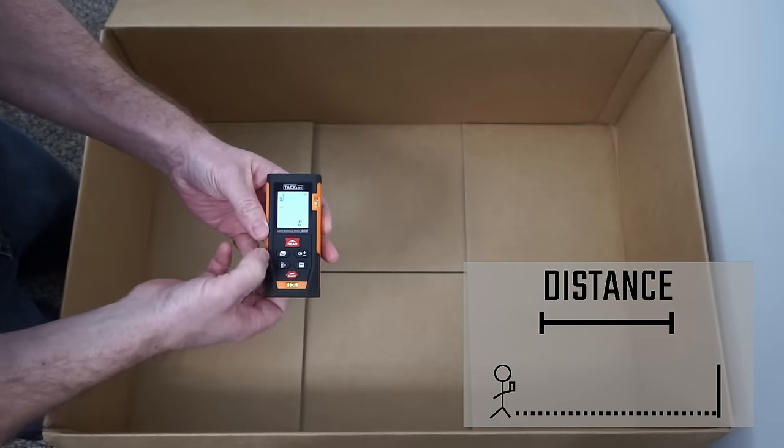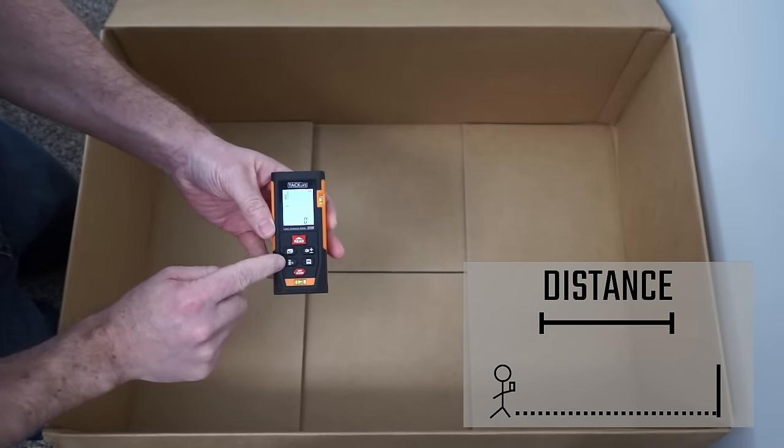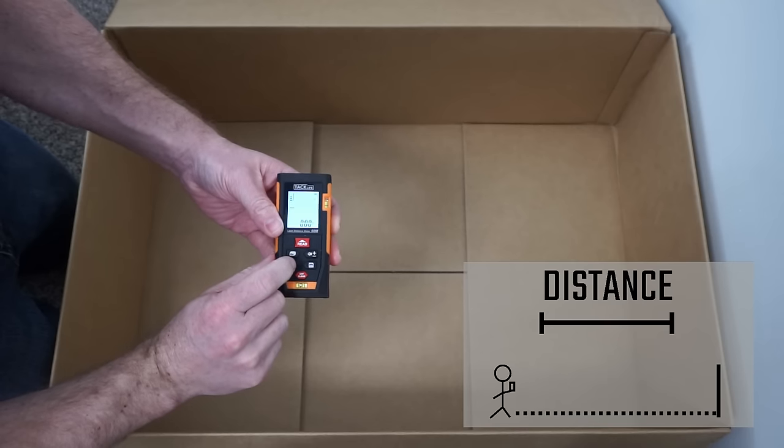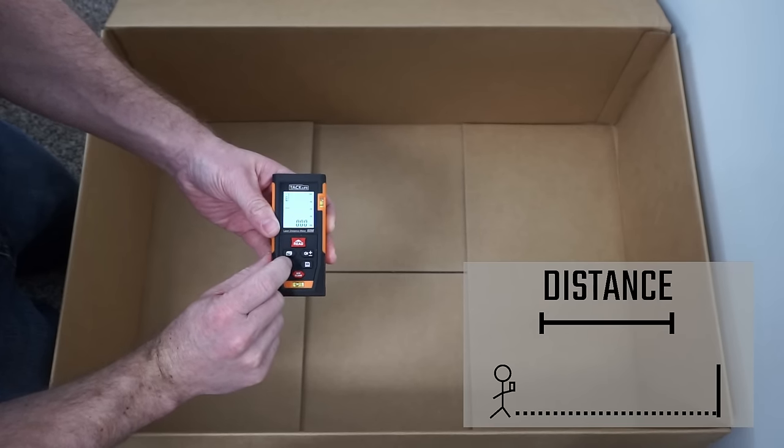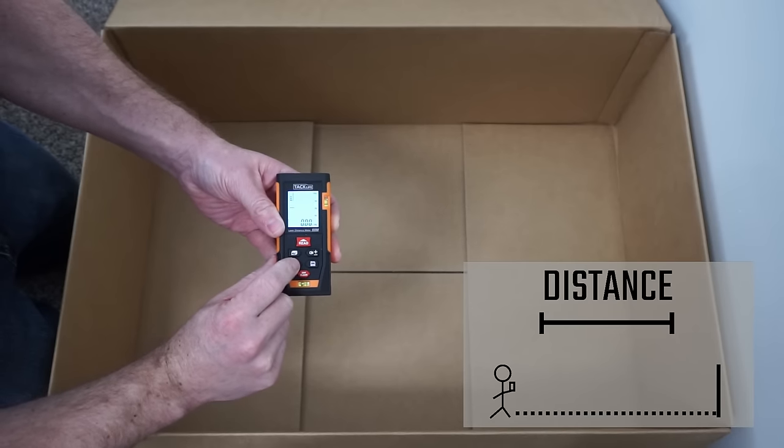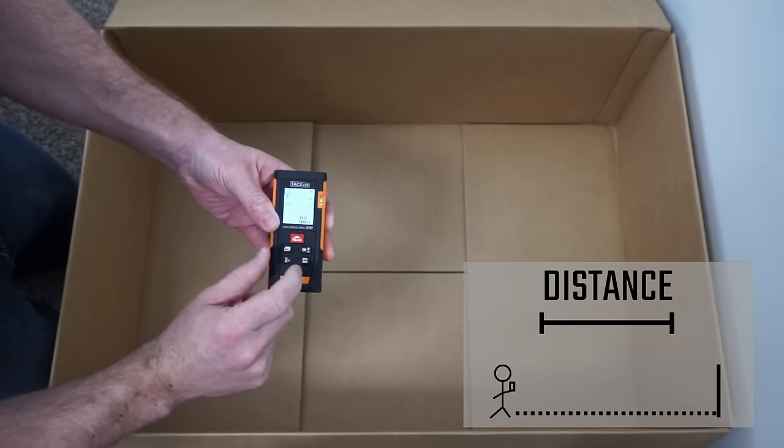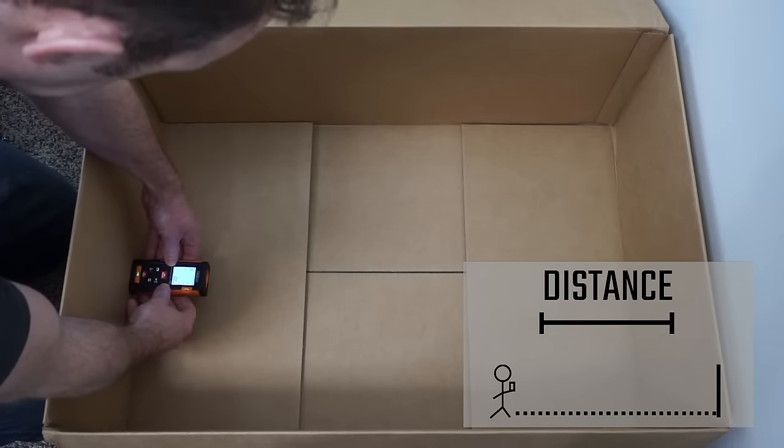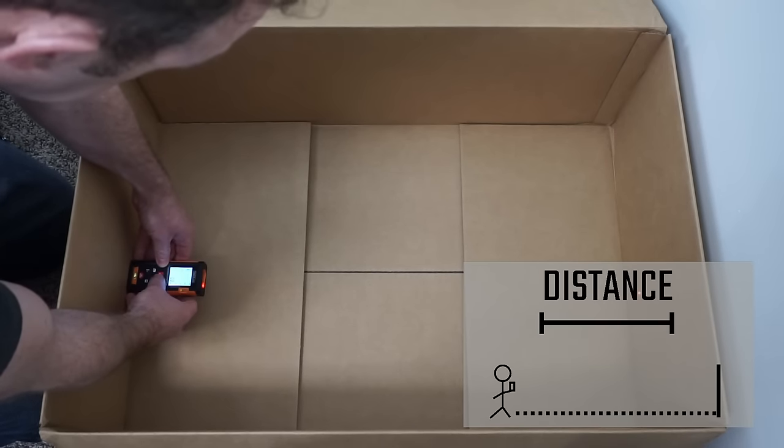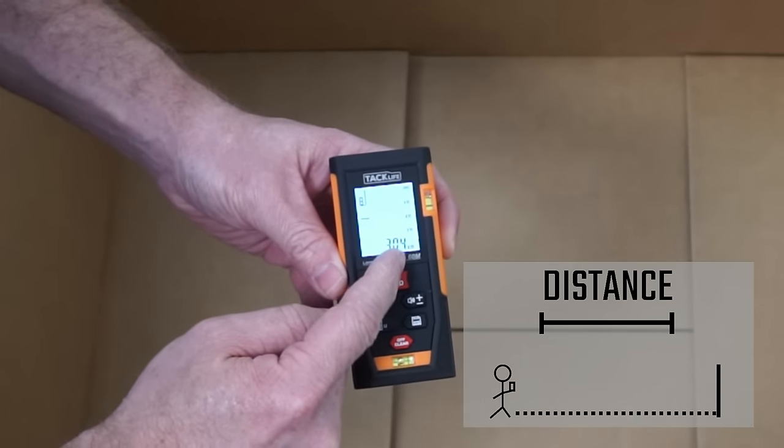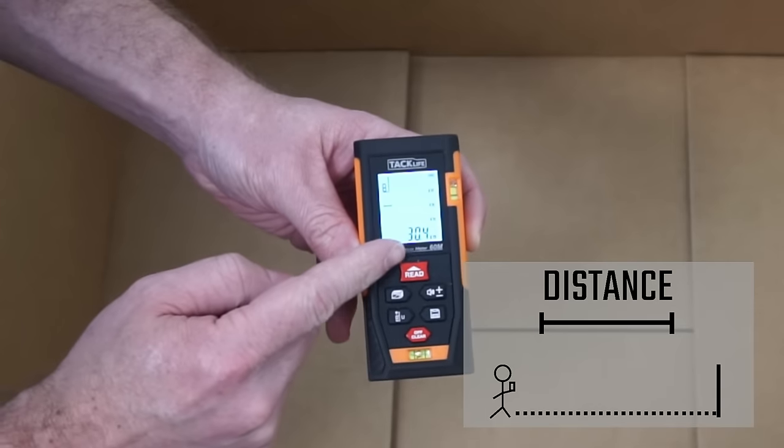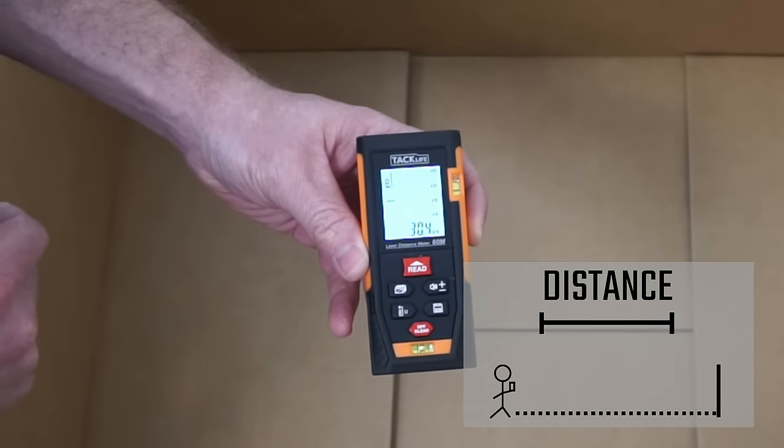If I turn this on, I can set the unit of measurement by pressing and holding this. So we've got feet, meters, a different unit for meters, and we can do inches. So I'll go here and I'll put it up against the side of the wall and then I'll just press the read button. You can see that it's 30.4 inches. That's consistent with what the tape measure was reading.